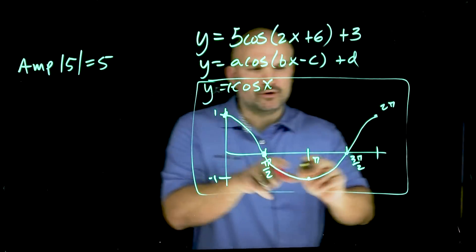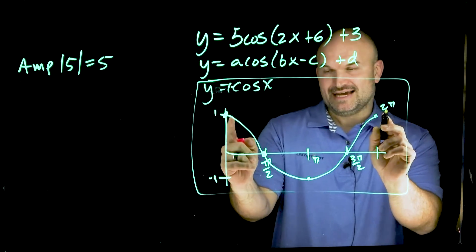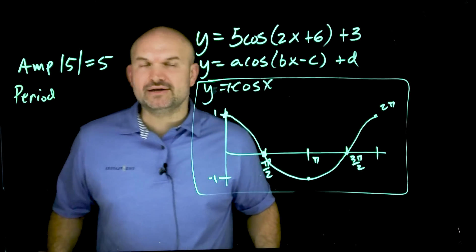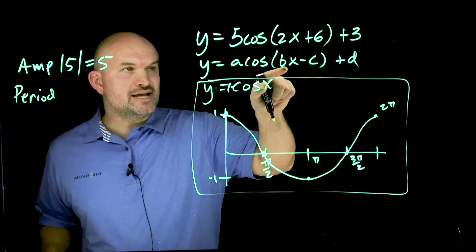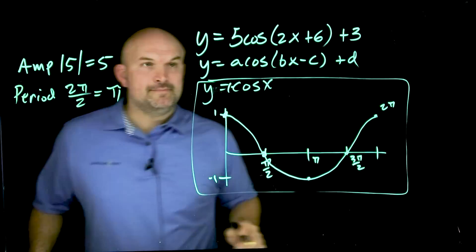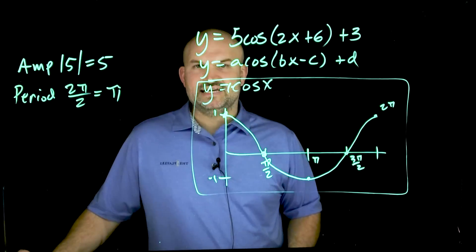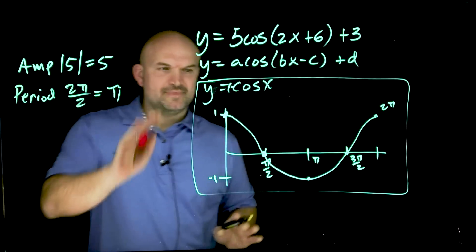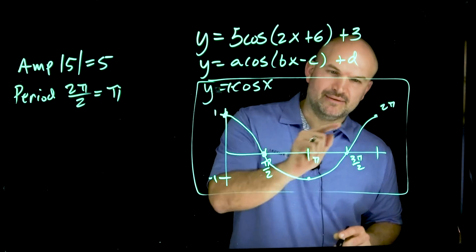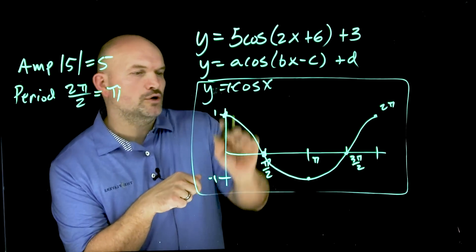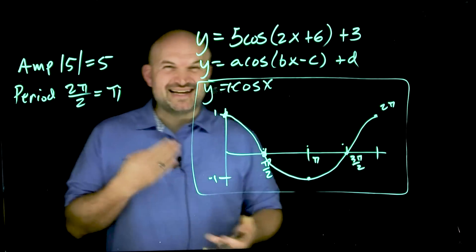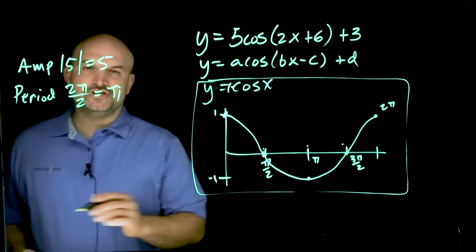The next thing is the period — how long does it take the graph to repeat itself? With transformations, to find the new period, you simply take two pi divided by b, where b is the coefficient of your variable inside the function. Here I have a two, so my new period is two pi divided by two, which is just pi. Now that we have our period, we want to know what our x scale is going to be — where all the maxes, intercepts, and minimums will occur. Those important points occur at every fourth of an interval, so we take the period and divide it by four.